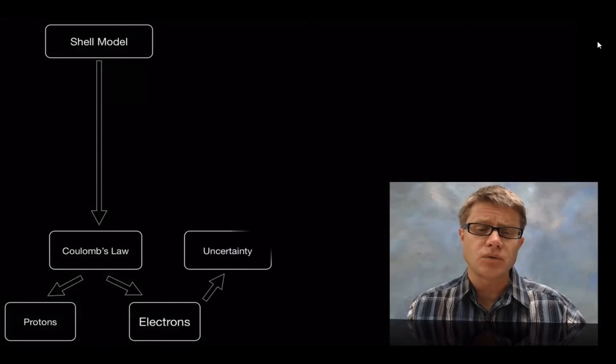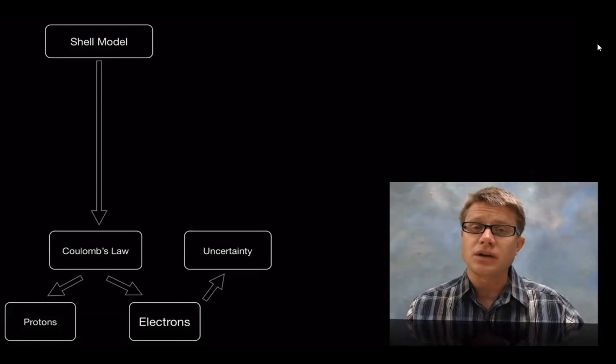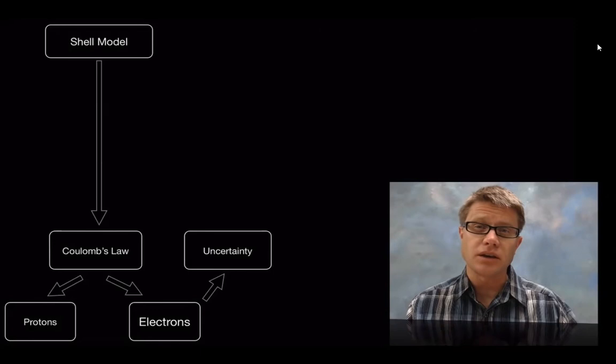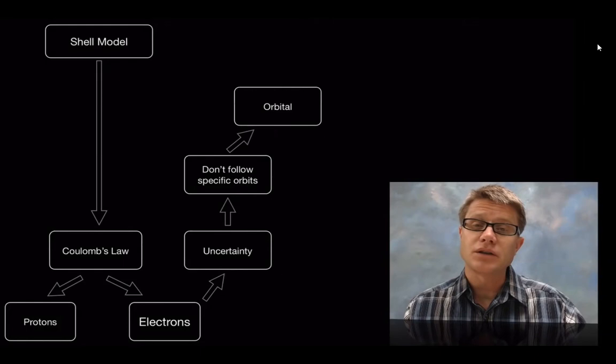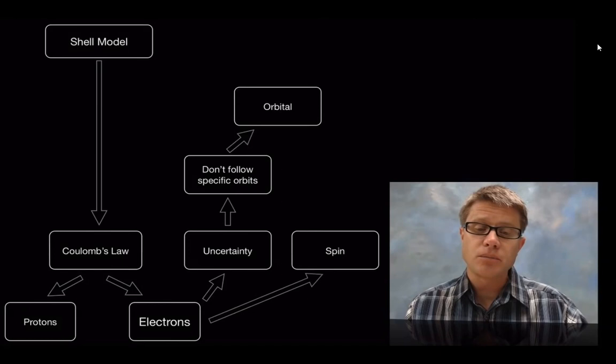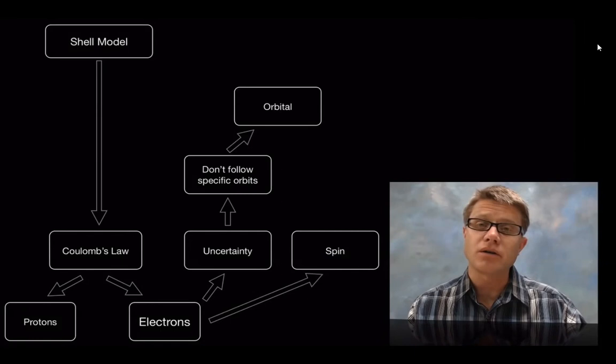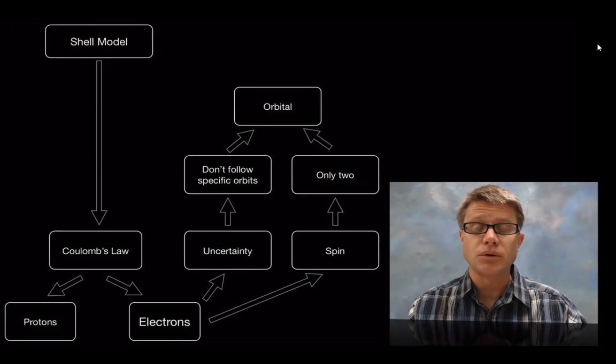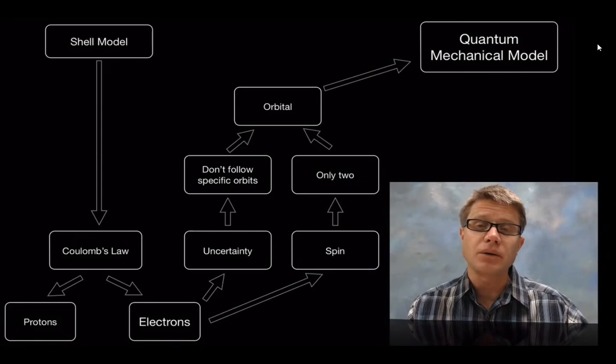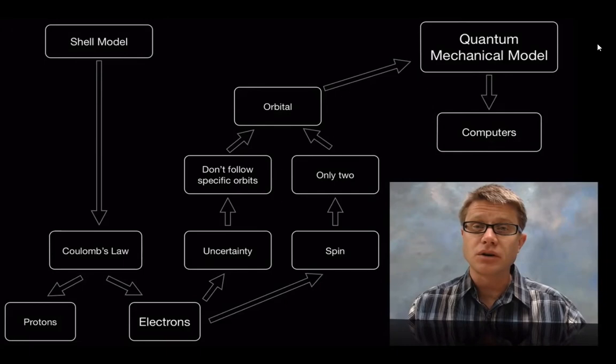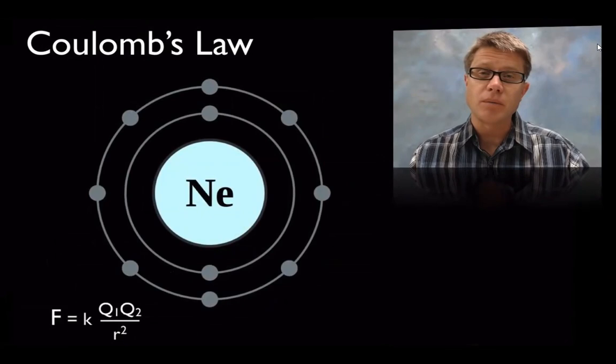Now, the shell model works great at making predictions, and so does the quantum mechanical model. They're just different theoretical concepts of what an atom looks like. And so, our shell model really is based on Coulomb's Law, which talks about the interactions between protons and electrons. But there's a couple of things about electrons that we discovered. One was the uncertainty principle. In other words, when you're looking at an electron, the act of light bouncing off of that and coming back to you changes the momentum of the electron. So, you can never know both the location and the momentum of an electron. There's uncertainty there. And so, they live in these clouds of probability.